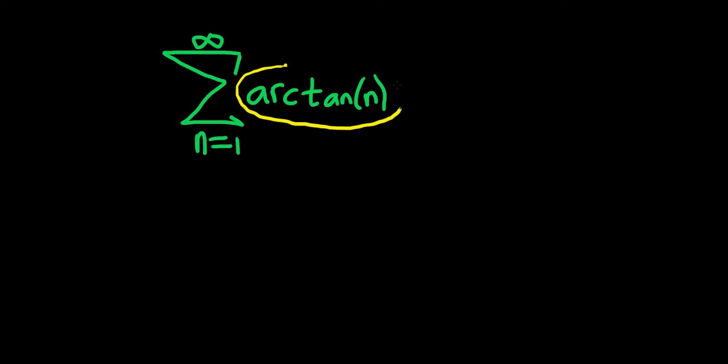Basically, you look at this piece here and you take the limit as n goes to infinity. If you don't get 0, then the series diverges. If you get 0, then no information.